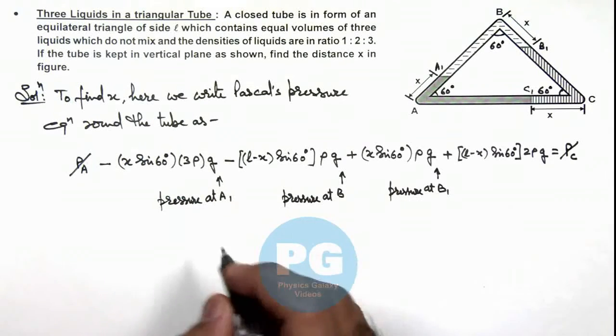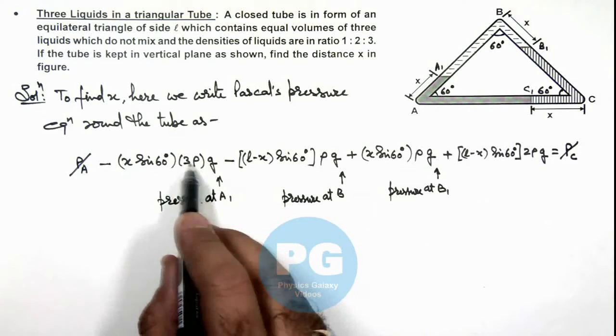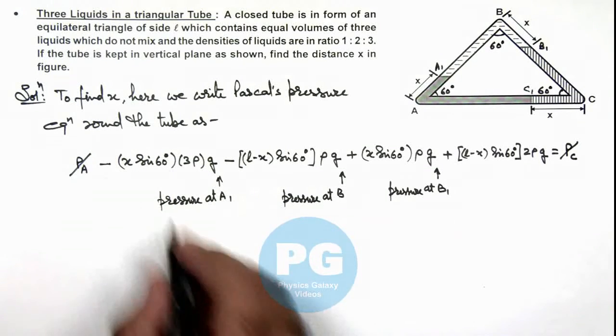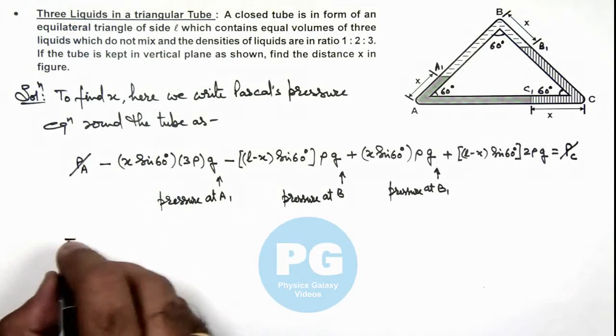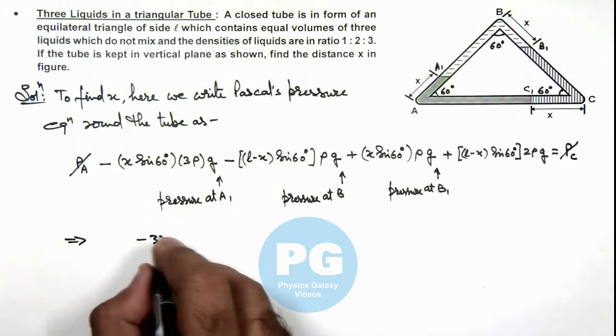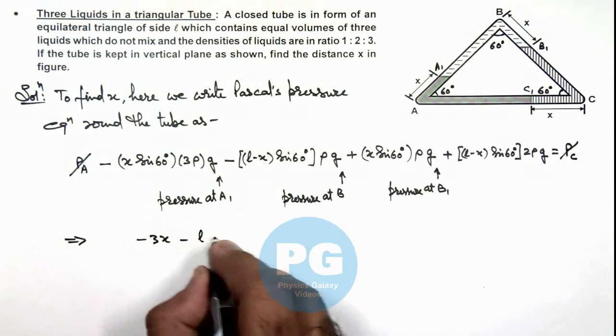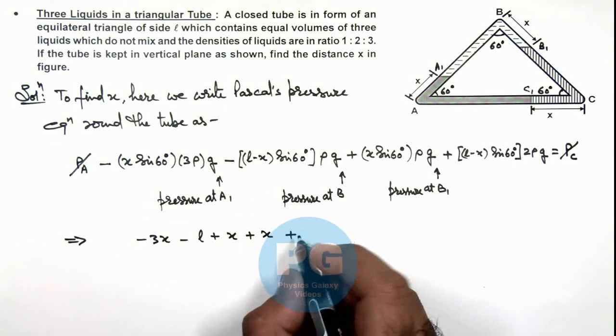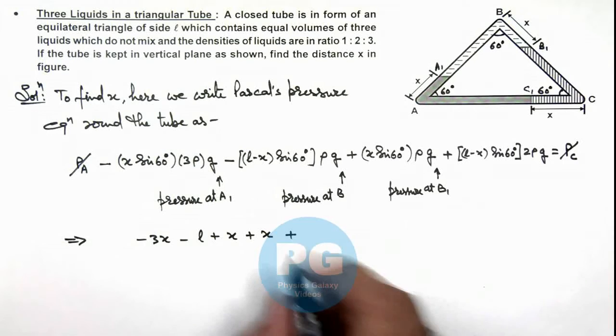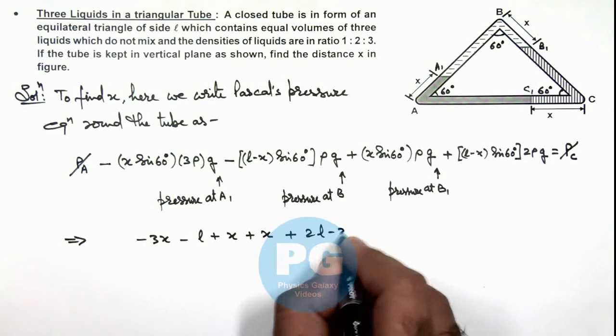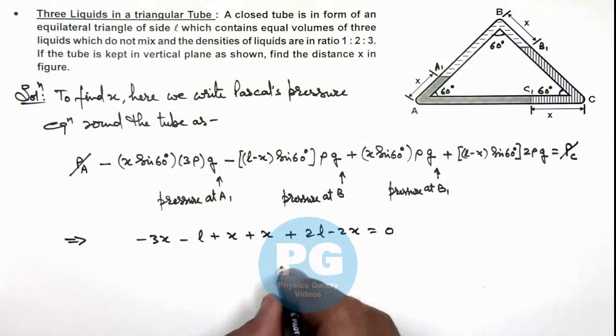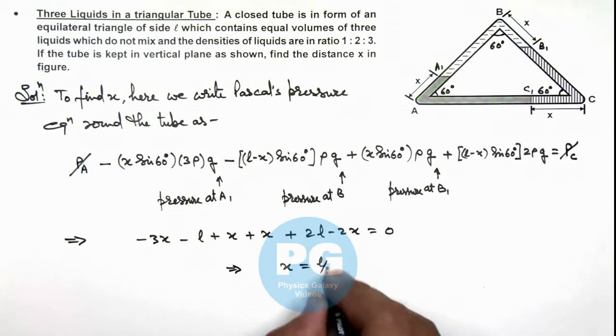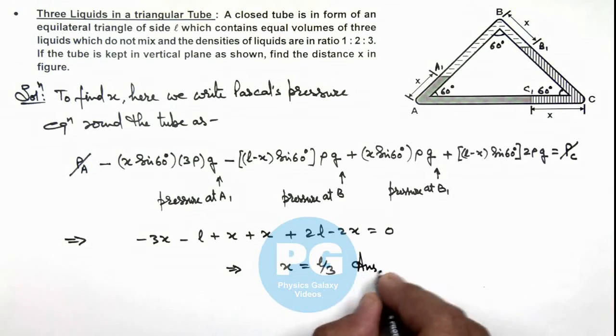Now simplifying these values, g, ρ, and sin(60°) can be cancelled. Simplifying this gives us -3x - l + x + x + 2l - 2x = 0. If we simplify this, it gives x = l/3, which is the result of this problem.